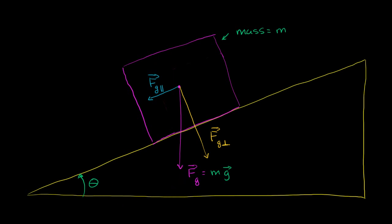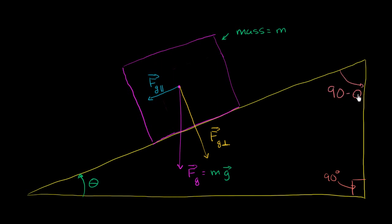We can break out some geometry here. Assuming this is a right angle, we know the sum of the angles in a triangle add up to 180 degrees. So if this angle, this angle, and this 90-degree right angle add up to 180, then these two non-right angles need to add up to 90 degrees. If this base angle is theta, then this angle right over here is going to be 90 minus theta.